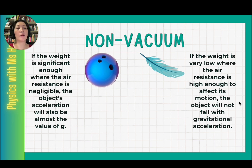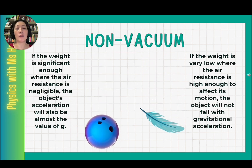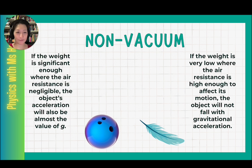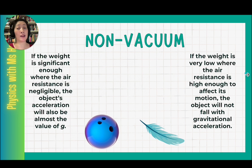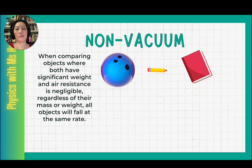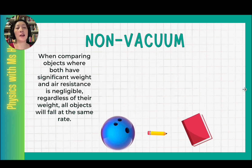So if we compare the bowling ball and the feather falling in air, the bowling ball will hit the floor first before the feather reaches the floor. Now let's compare objects where both have weights significant enough that air resistance is negligible. Regardless of their mass or weight, all of them would fall at the same rate — the gravitational acceleration.